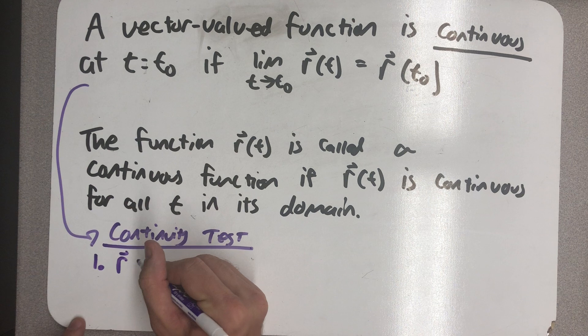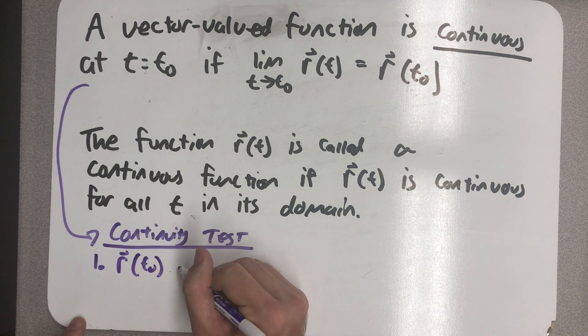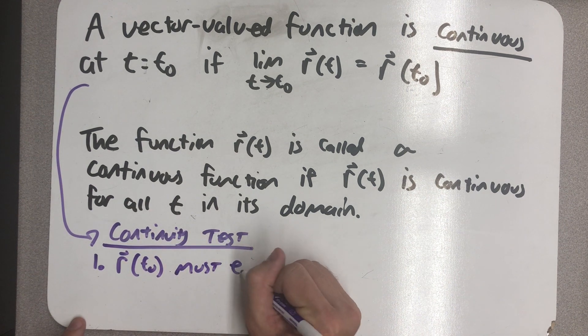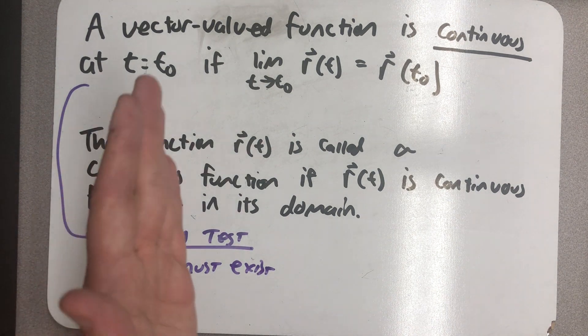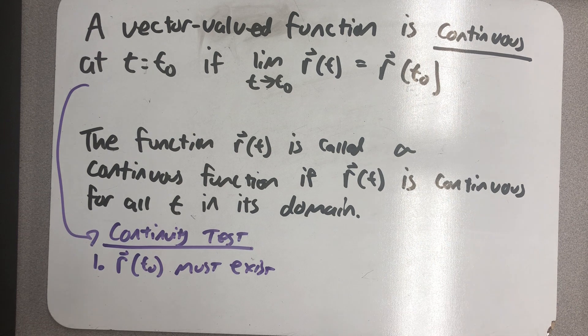First off, r of t-naught has to exist. Well, if r of t-naught exists, it means all three scalar component functions exist.